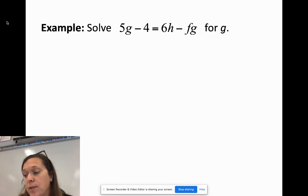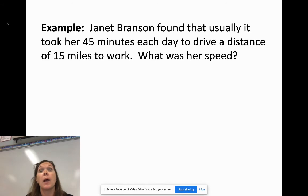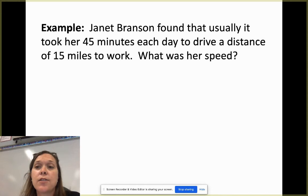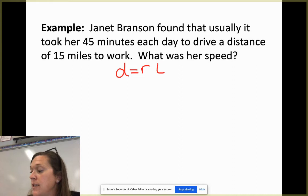And now we can actually go to the application of them. So here is our first word problem example. Again, pause this at any point in time. If you need to stop to take a moment to actually copy all this down, I'm going to assume that you're doing that because I'm going to keep on plugging through. So we got Janet Branson found that usually it took her 45 minutes each day to drive a distance of 15 miles to work. What was her speed? So we're talking about speed. We're talking about distance and miles. So that means we're probably going to be using our distance formula. You remember distance formula is equal until D equals RT. If you don't remember that, you're going to want to definitely jot that down, highlight it, label it, what each of those things stand for. The D is distance. Your R is rate. Your T is time.